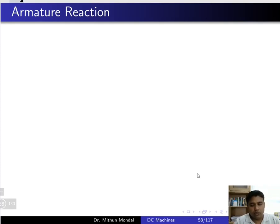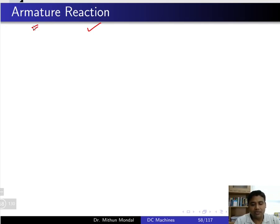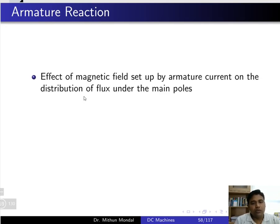Good morning. Today's class on DC machines, we are going to discuss an important phenomenon known as armature reaction. The armature is where the conductors are present and it is rotating — it is basically the rotor. Armature reaction is the effect of the magnetic field set up by the armature current on the distribution of flux under the main pole.